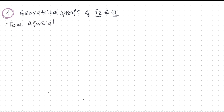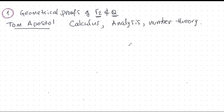Tom Apostol was a very great writer of mathematics textbooks. He wrote books on calculus, analysis, and number theory. One book was really phenomenal — it was called Dirichlet Series and Modular Forms or something like that. It was about Hardy-Ramanujan's circle method. Really amazing book. So Tom Apostol is a great writer; if you can get your hands on his books, just get them and read them.